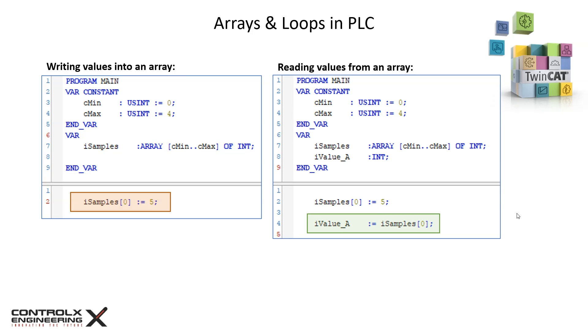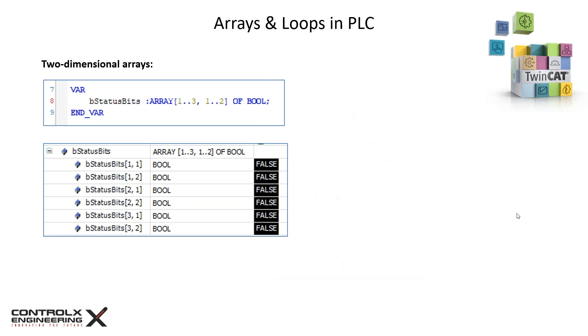The next example shows how to read a value from your array. Here the array stores a value of 5 at index 0, which is then assigned to our new variable I value underscore a. Care must be taken when accessing the index of an array to make sure it's within the valid range. The array in our example has index limits from 0 to 4. If you try to access outside this range, you will get a compile error.